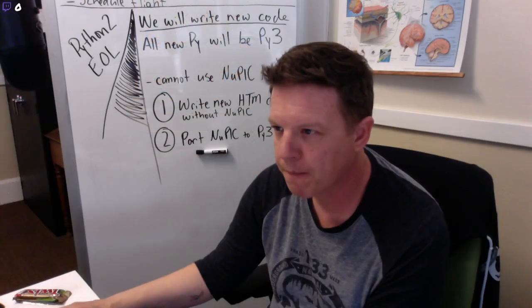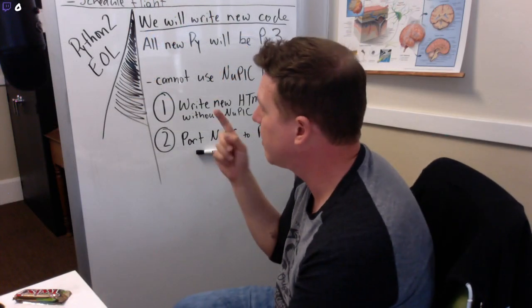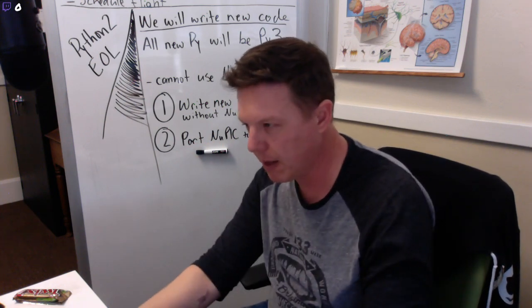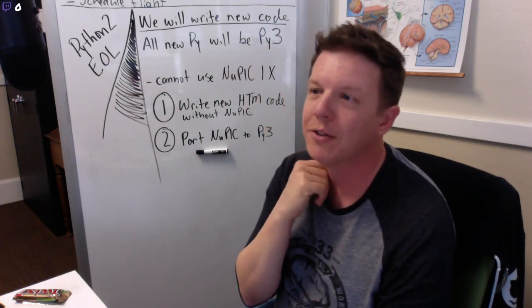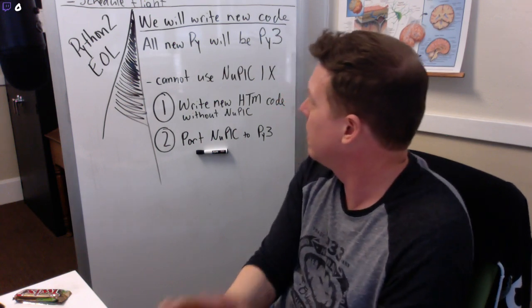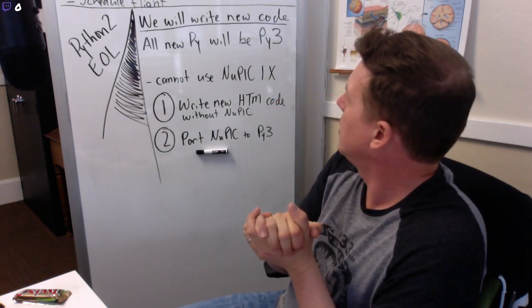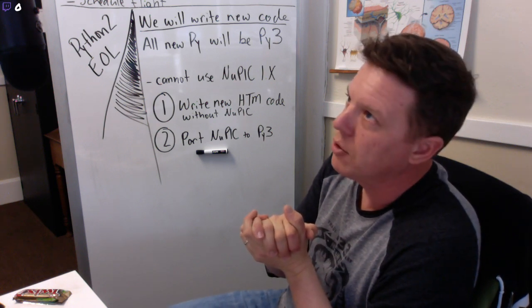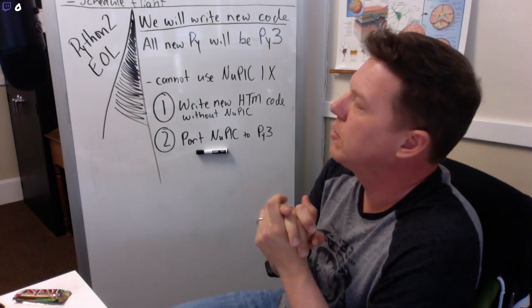I'm going to be investigating our Python project, NuPIC — the Numenta Platform for Intelligent Computing. It's Python 2, and I'm reminded every time I'm at the command line that Python 2 end of life is January 2020. So we need to potentially upgrade NuPIC or port NuPIC to use Python 3.